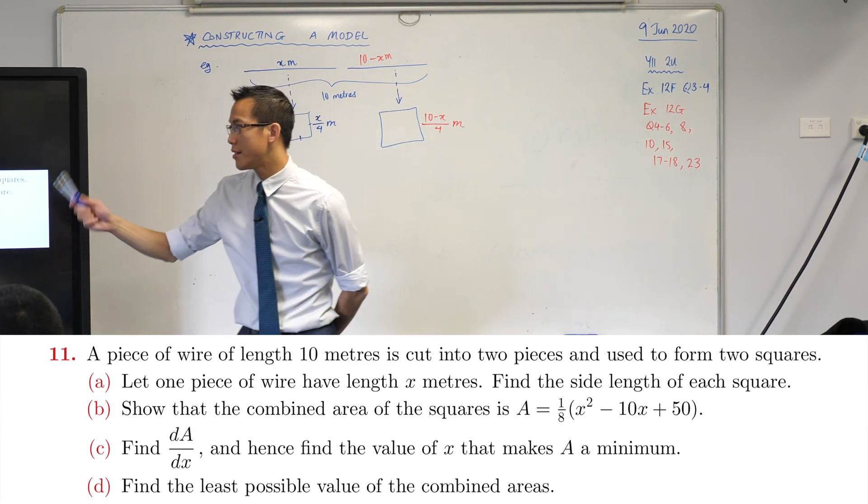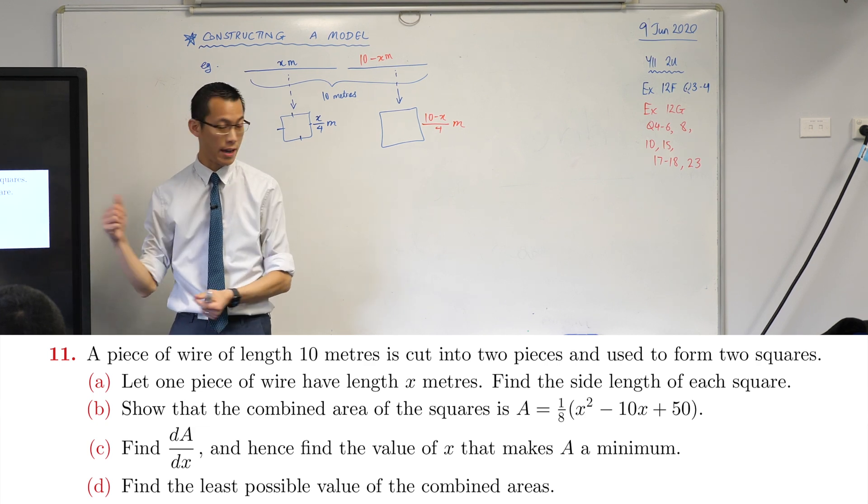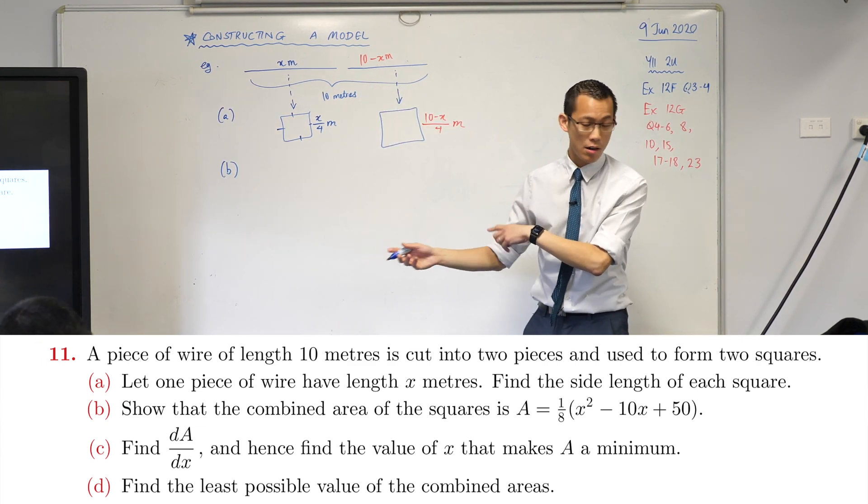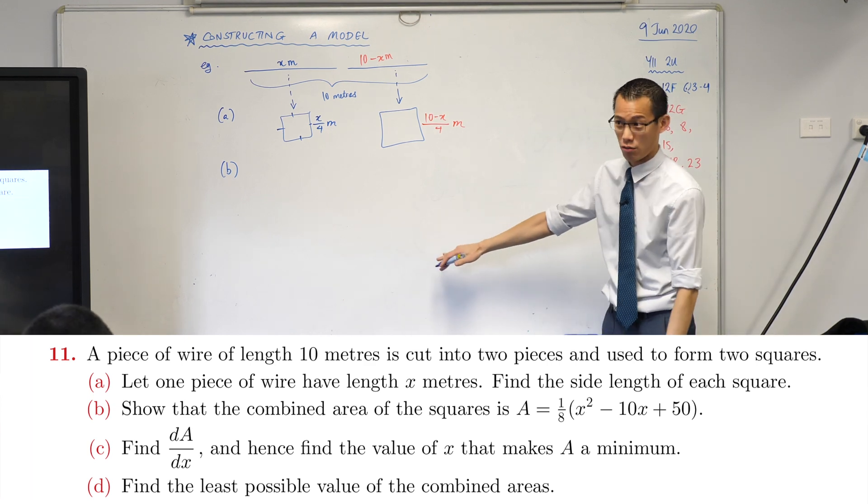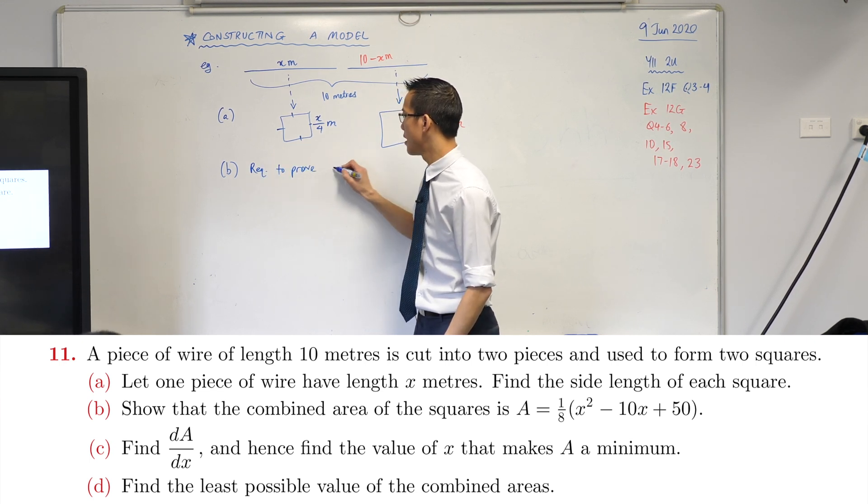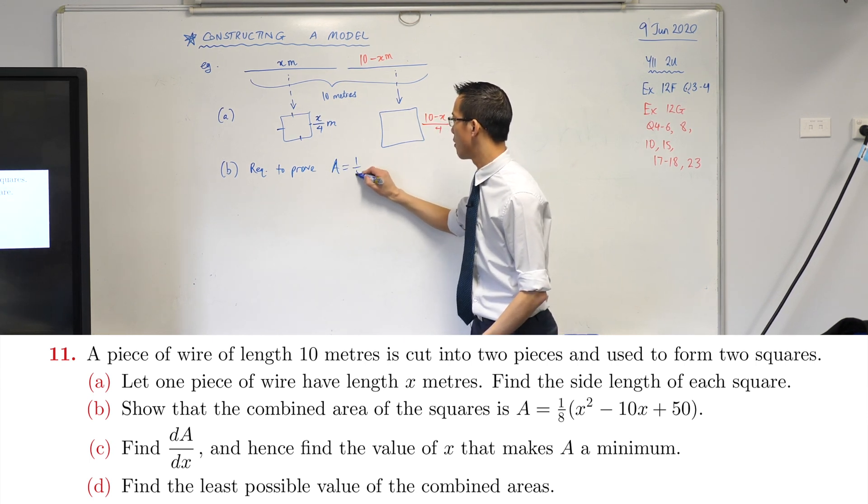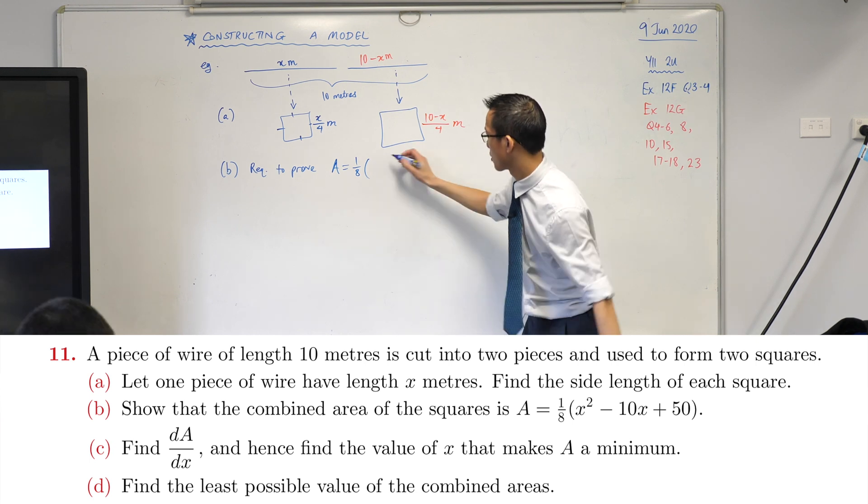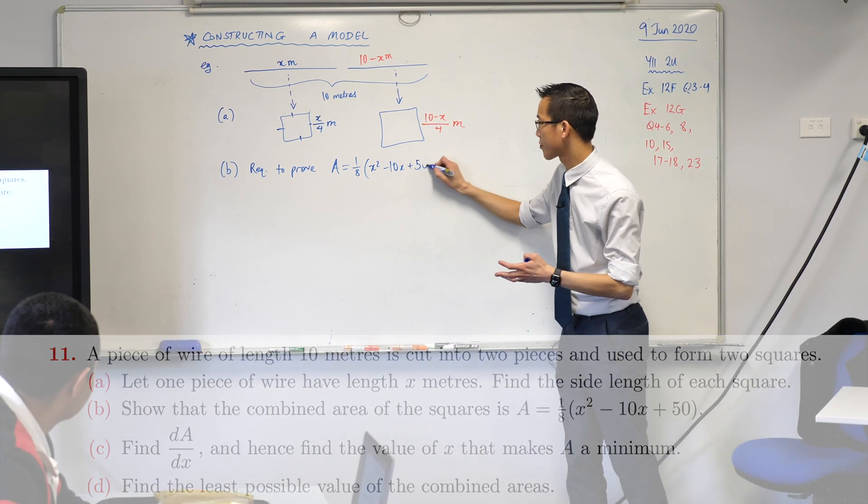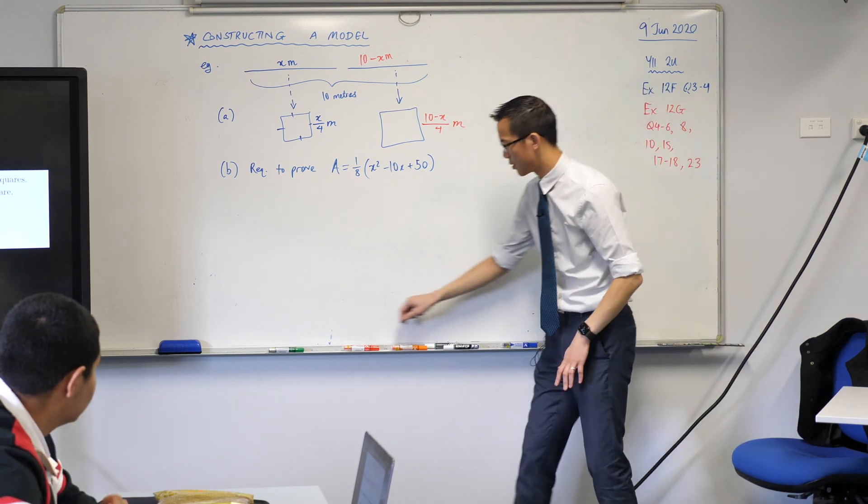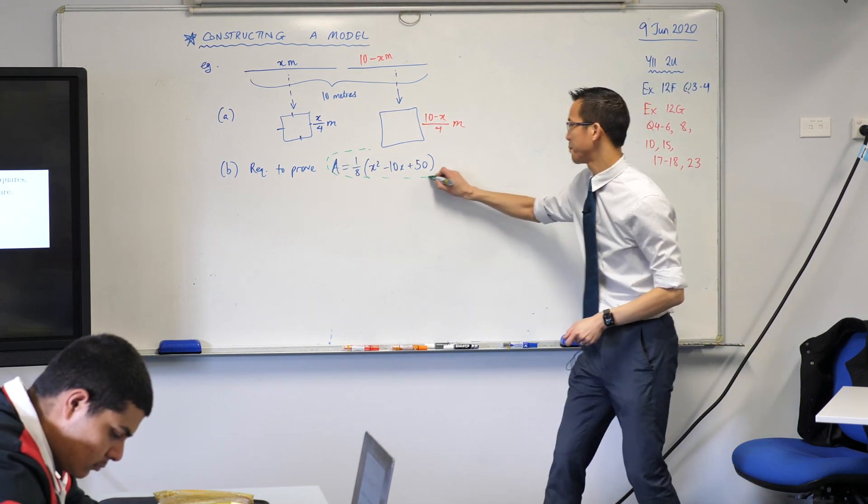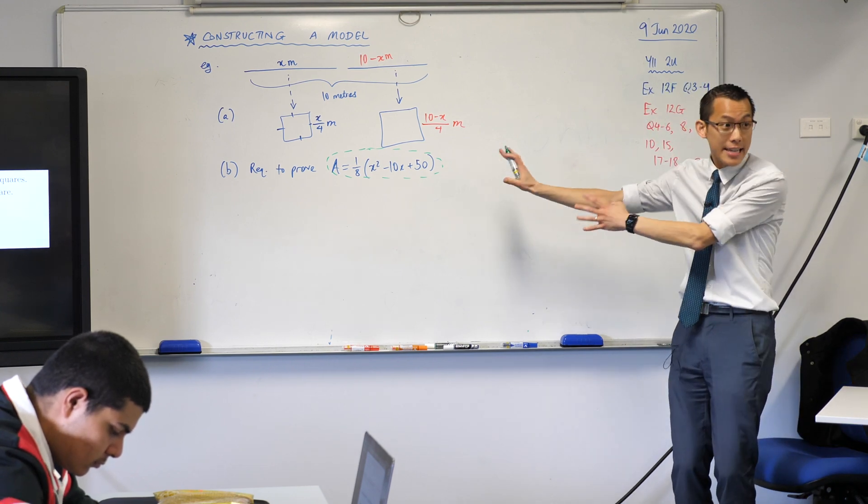What's the next thing? It says show that the combined area of the squares is—then they give you this equation. Now this equation is really important. I'm going to write down part b: this equation here, I have to show that it's the case. So I'm required to prove that A = 1/8(x² - 10x + 50). Now this thing here is what we call the model—this is the thing we're trying to construct. Like I said, this question is nice to you: they've actually even told you, hey, this is the model you need to end up here.